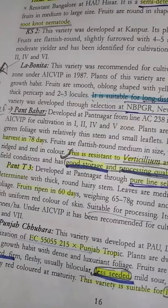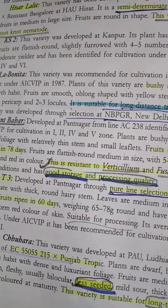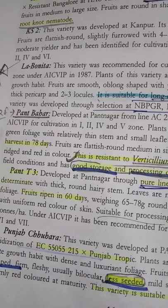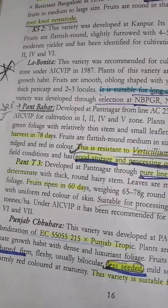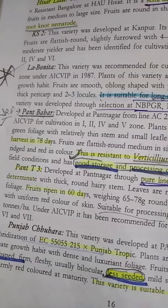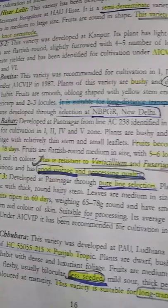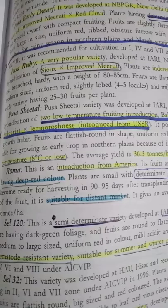Pant Bahar is resistant to verticillium and fusarium wilt, and is good for storage and processing quality. Also remember: Pant Ragini is a variety of fenugreek — this was asked in the food safety officer exam in Rajasthan. Punjab Chhuhara is also notable.